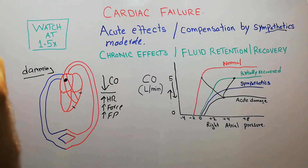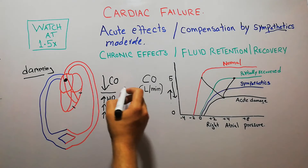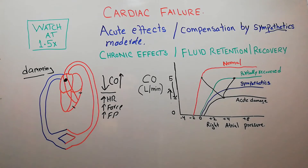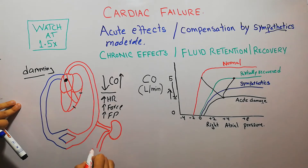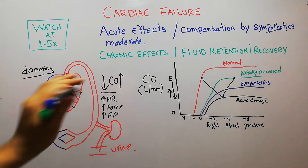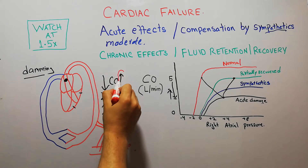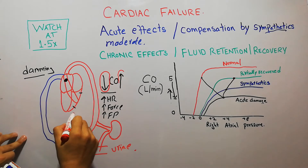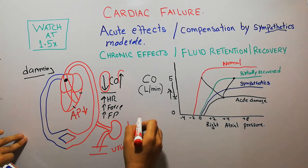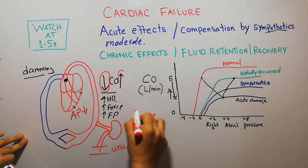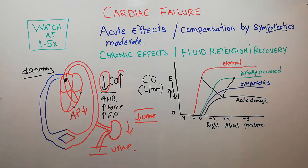The sympathetic system has slightly helped to recover the cardiac output. Now the chronic stage of cardiac failure begins, in which fluid retention will occur and recovery of the damaged portion of the heart will occur. Normally, extra fluid is excreted by the kidneys in the form of urine. When cardiac failure occurs, cardiac output decreases, arterial pressure falls, and blood flow to the kidneys also decreases, leading to decreased urine formation.